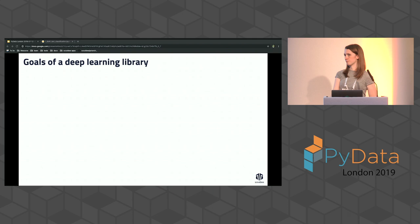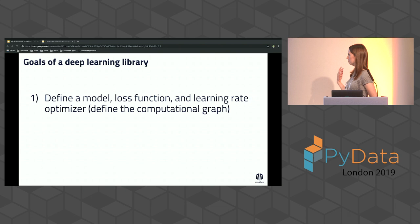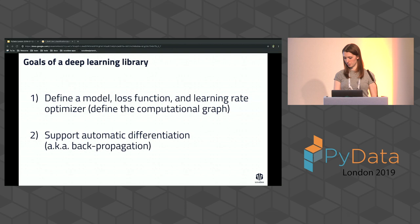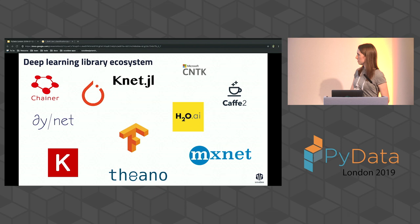To talk about deep learning libraries, we first want to understand their primary objective: define a model, a loss function, and an optimizer — essentially defining how matrices are processed and how the model learns. They also need to support automatic differentiation, which is back propagation. We have this ecosystem of deep learning libraries — PyTorch, TensorFlow, Keras, Theano, Chainer, and others. A key differentiator is whether they use a static versus dynamic computation graph.